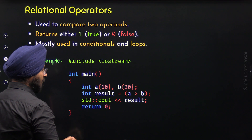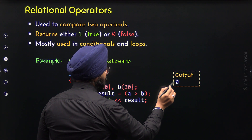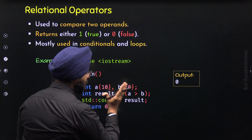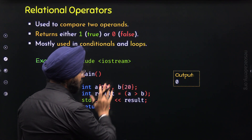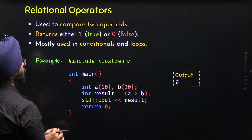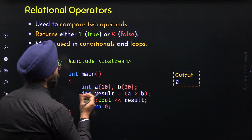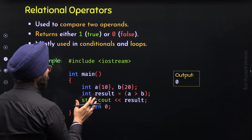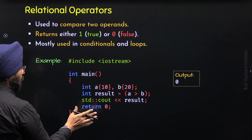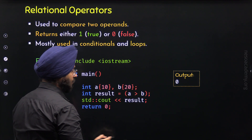We can display this value on the screen with std::cout. When we execute this program, we will get 0 as the output. We are getting 0 because this condition is not satisfied — or we can say this condition has turned out to be false. So we have learned how to use a relational operator in a C++ program. Later, we will understand its actual usage in conditionals and loops. In this program, I used the greater-than operator, which is a relational operator.